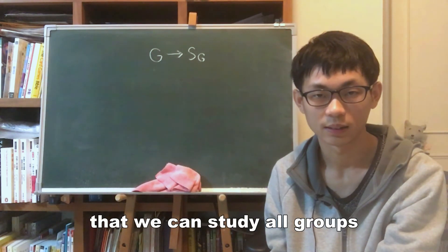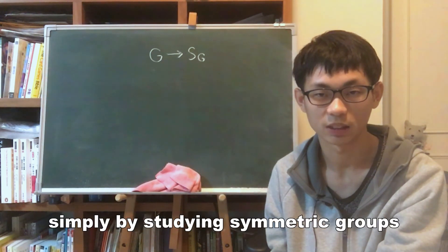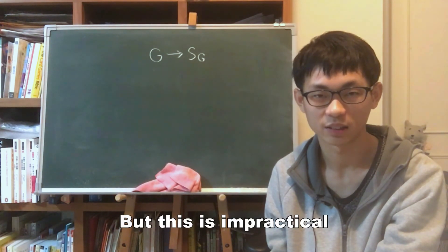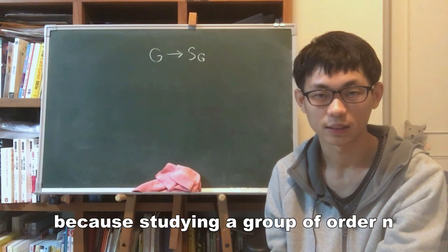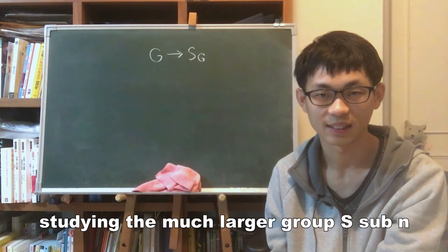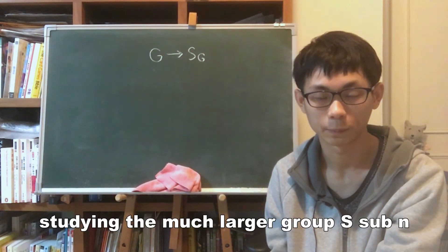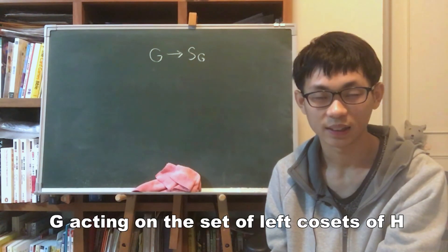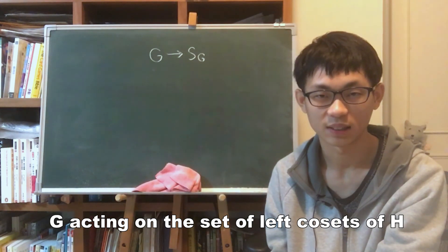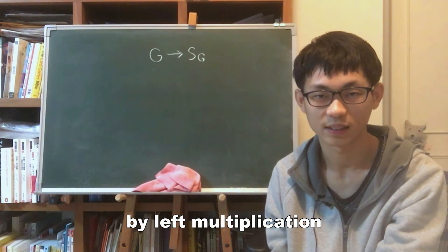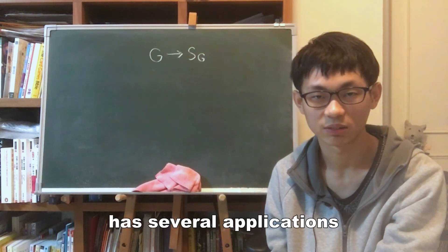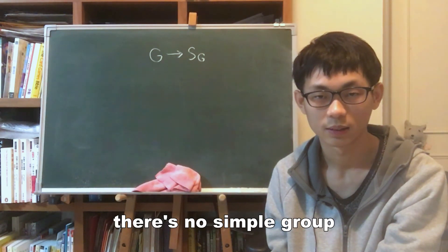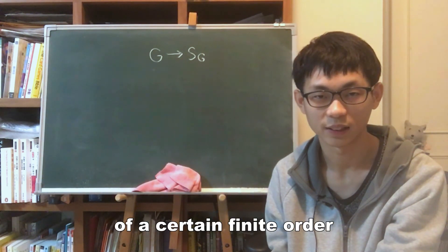Cayley's theorem suggests that we can study all groups simply by studying symmetric groups. But this is impractical because studying a group of order n would imply studying the much larger group S_n. On the other hand, G acting on the left cosets of H by left multiplication has several applications, such as proving that there is no simple group of a certain finite order.